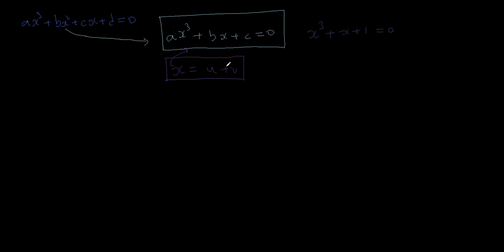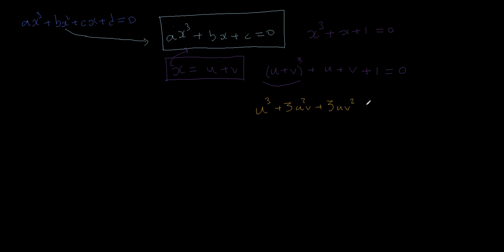If x = u + v, we substitute u + v into this equation and get (u + v)³ + (u + v) + 1 = 0. Expanding using the binomial theorem, this is u³ + 3u²v + 3uv² + v³ + u + v + 1 = 0.